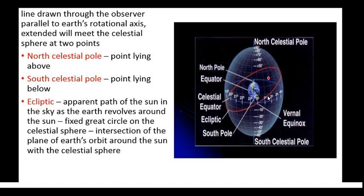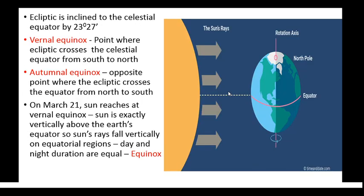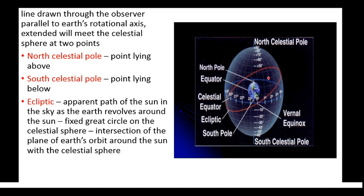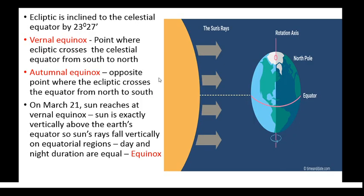In this slide we have seen north celestial pole, south celestial pole, and also ecliptic. Here you can see the blue circle is the celestial equator and the red great circle is the ecliptic, and there is a small inclination between them. That angle is 23 degrees 27 minutes — that means the ecliptic is inclined to the celestial equator by 23 degrees 27 minutes.